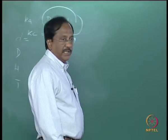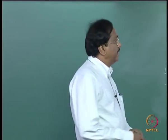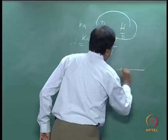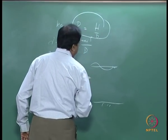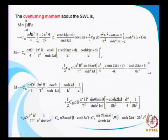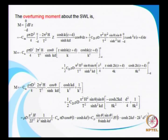The overturning moment about the still water line is obtained as dF into z — elemental force times its moment arm — and then carrying out the integration. Finally you get an expression which is again a function of theta, similar to the total force expression. So the moment is going to vary as shown in equation 8.